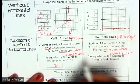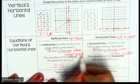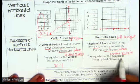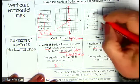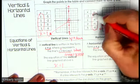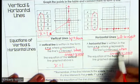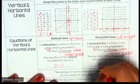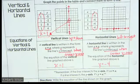Y-axis, y-intercept, x-intercept, x-axis. So the equation for this horizontal line — notice all the y values are the same — it's crossing at negative 4, so this is y equals negative 4.